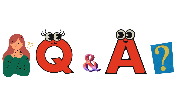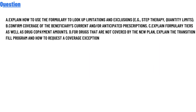Today's question: Option A explains how to use the formulary to look up limitations and solutions, including step therapy and quantity limits. Option B confirms coverage of the beneficiary's current and/or anticipated prescriptions. Option C explains formulary tiers as well as drug copayment amounts. Option D, for drugs not covered by the new plan, explains the transition field programs and how to request a coverage exception.